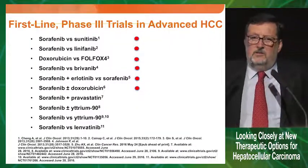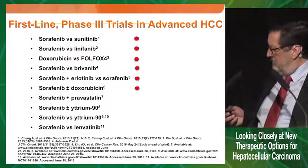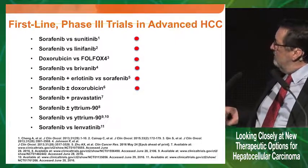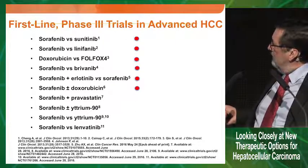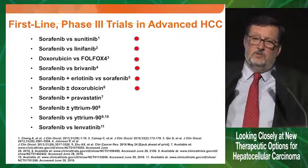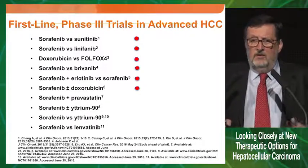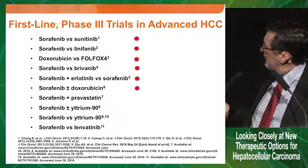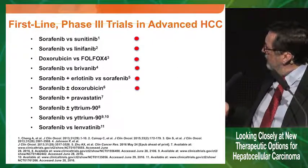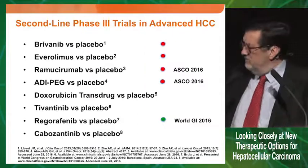All the trials were negative in first-line trying to beat sorafenib, and this has to be retained. The FOLFOX regimen said to be positive in China — for reasons I will not detail — was negative, but the situation in China is what it is, and this is why it was classified as effective by the Chinese FDA. But negative is negative and cannot be positive. Here you have the list of those that failed in second-line, and the one that just turned positive: Regorafenib in second-line.